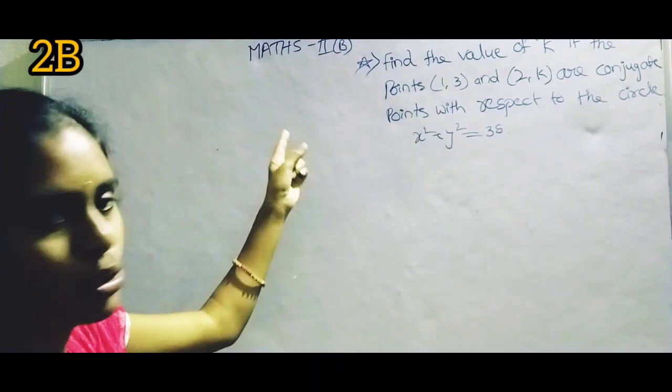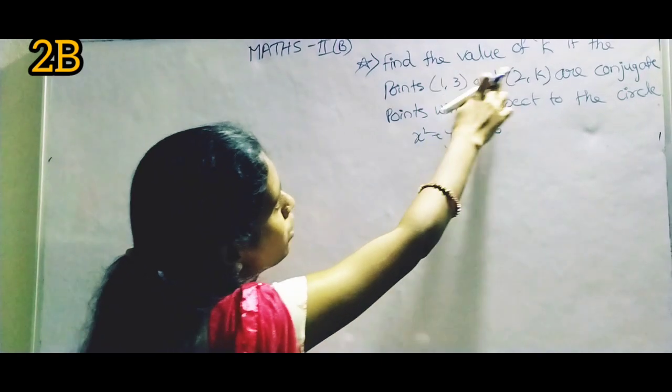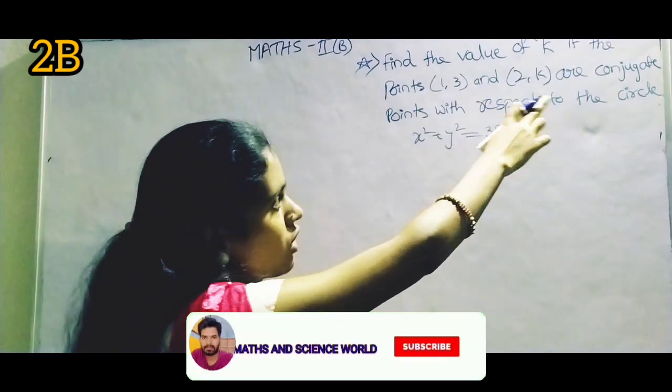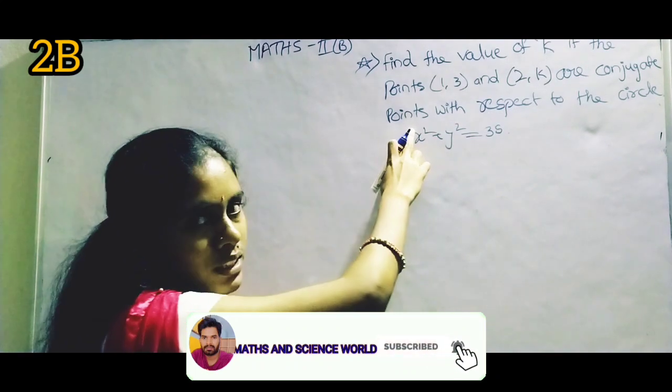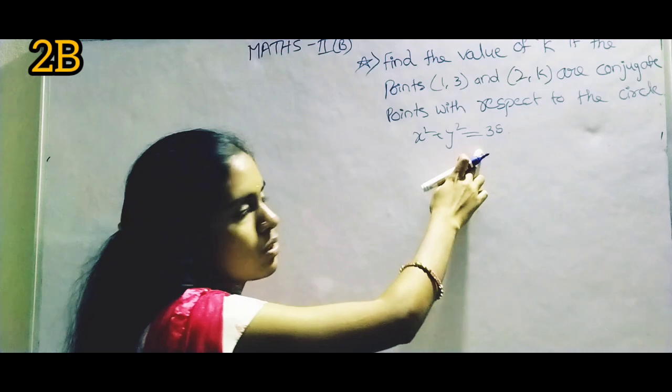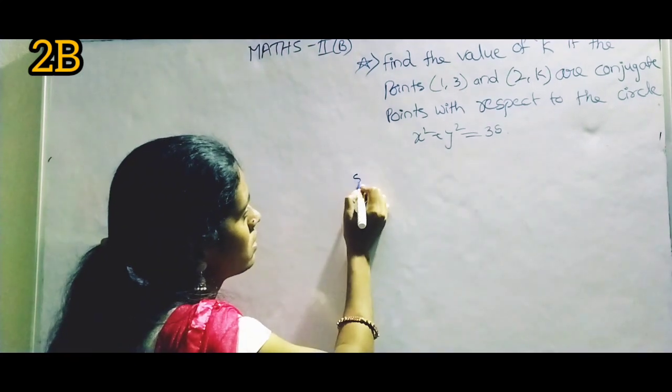2 marks most important question in 2B circles chapter. Find the value of k if the points (1, 3) and (2, k) are conjugate points with respect to the circle x² + y² = 35. See the solution.